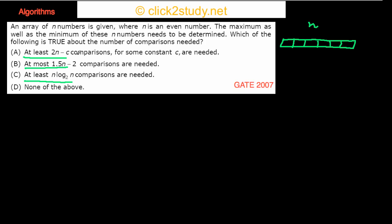When it says 'at least these many comparisons are needed,' it means you cannot do better than that. When it says 'at most,' you have to think of it differently — it's talking about the best algorithm, meaning the best algorithm in the worst case will need these many comparisons.